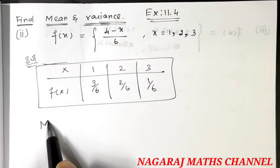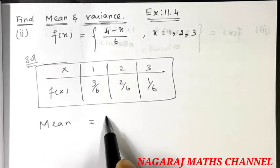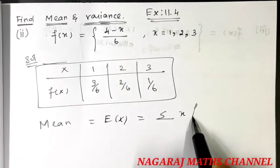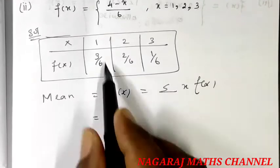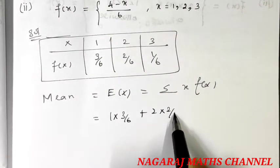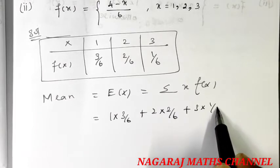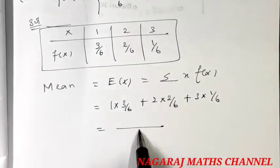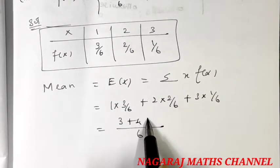The mean is E of x. This is summation x into f of x. So, 1 into 3 by 6, 2 into 2 by 6, plus 3 into 1 by 6. So, denominator is 6, 3 is 4, it is 3.